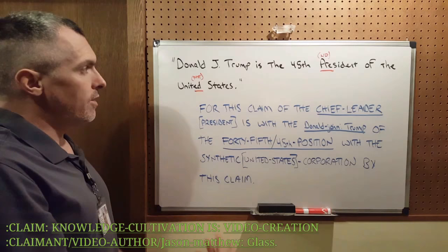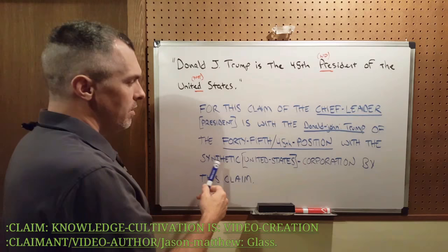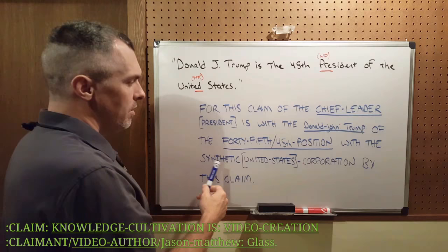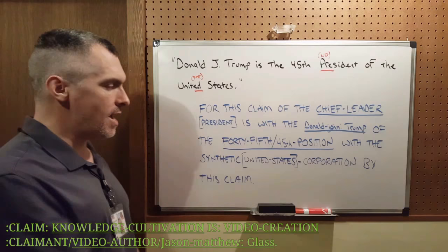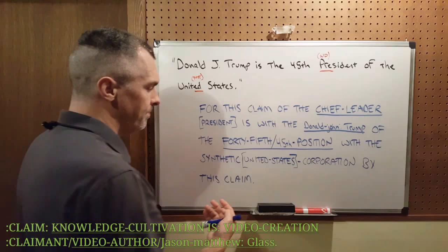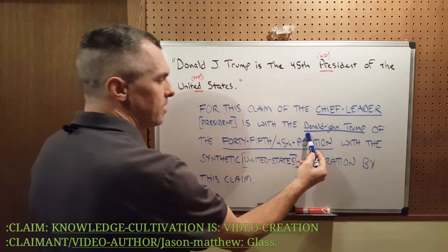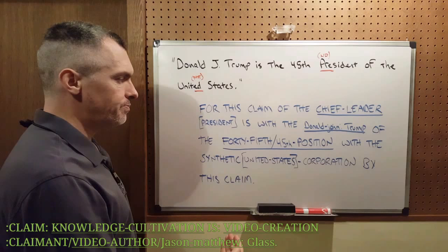So how do you say 'Donald Trump is the 45th president?' This is how you would say it — one way to say it — in this now time: 'For this claim of the chief leader is with the Donald John Trump of the 45th position with the synthetic corporation by this claim.' And I say synthetic because 'United States' is past tense — it doesn't exist in the now time, so I'm bringing it into the now time by using this word instead. So: synthetic United States corporation. And I use the word 'chief leader' as a positive performance word for this no-contract word 'president.' And I use what his full name would be, punctuated. And these underlined words are known as compound facts or compound knowns — K-N-O-W-N.